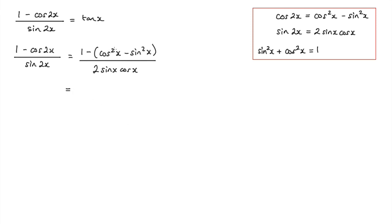Now let's look at cos squared x minus sine squared x and expand this bracket. So we'll have 1 minus cos squared x plus — we've got two negatives, which makes a plus — and that'll be sine squared x, and that's all over 2 sine x cos x.